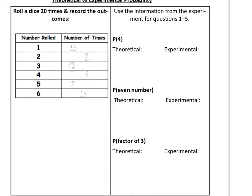First, what is the probability of rolling a four — P(4)? The theoretical probability is one out of six, because one number out of six is a four. Looking at our experiment, we got a four two times out of twenty, which simplifies to one-tenth. They're kind of close, but they're not exact.